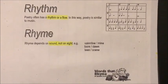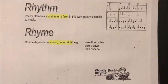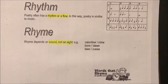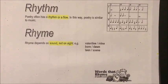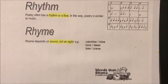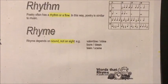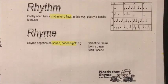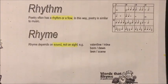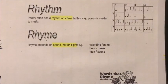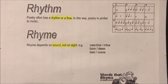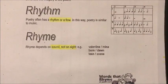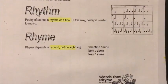Rhyme depends on sound, not on sight — dit gaan nie oor hoe die woord lyk nie, dit gaan oor hoe die woord klink. Look at the examples: valentine and mine; born and dawn — you've got O-R-N and A-W-N at the end of the two words, so they don't look the same at all, but they sound the same. And then teen and seen. It is the sound at the end of the word. You're also not going to do rhyme patterns — in additional language you don't need to worry about rhyme patterns.